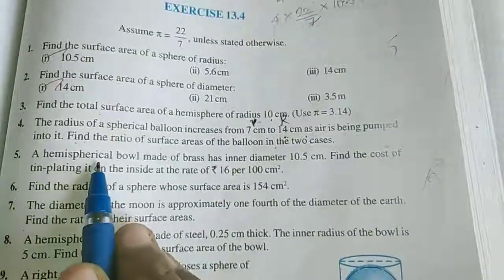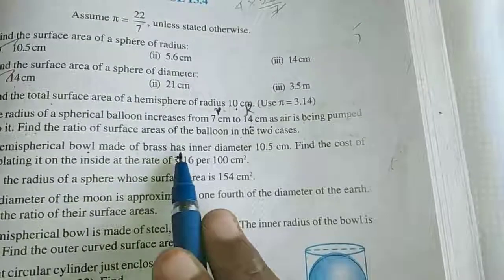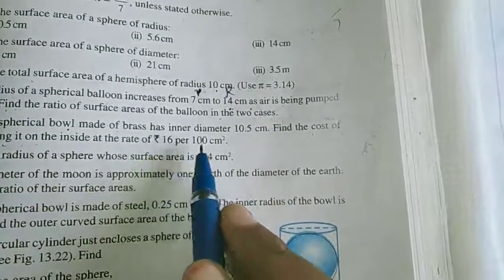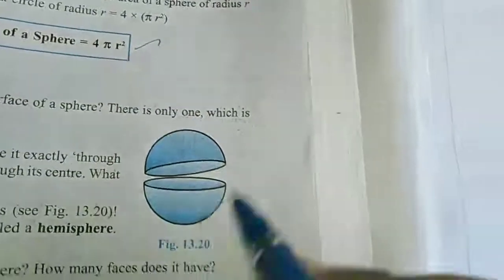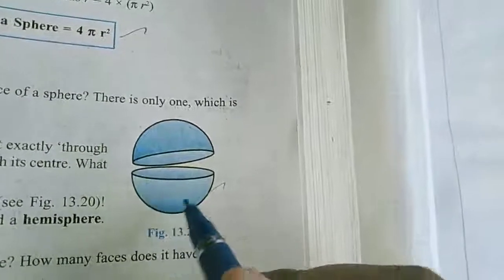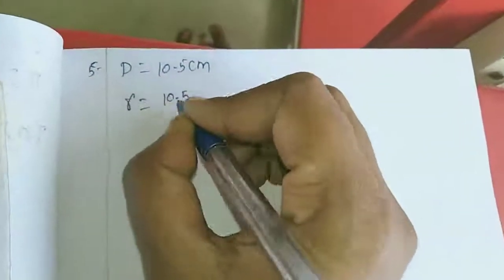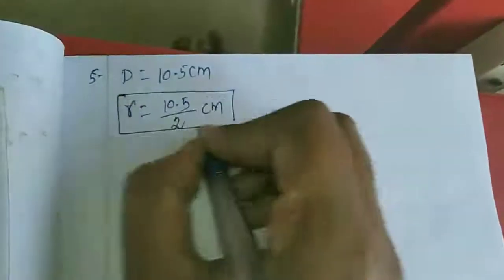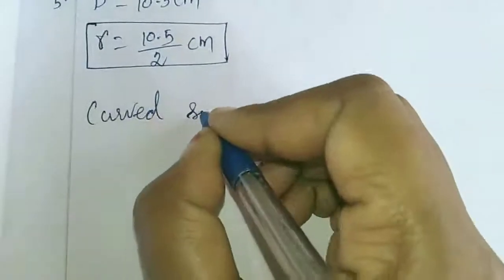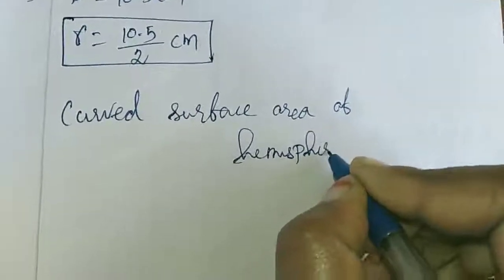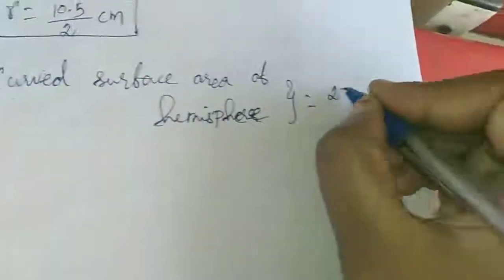Fifth sum: A hemispherical bowl made of brass has inner diameter 10.5 centimeter. Find the cost of tin plating it on the inside at the rate of rupees 16 per 100 centimeter square. This is a hemisphere; we paint inside, so we find the curved surface area. Diameter = 10.5, so R = 10.5/2. Curved surface area = 2πr².